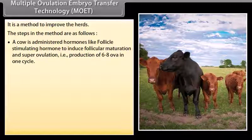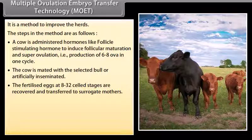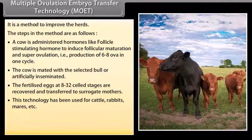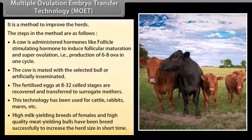Multiple ovulation embryo transfer technology (MOET) is a method to improve herds. A cow is administered hormones like follicle stimulating hormone to induce super ovulation, producing 6 to 8 ova in one cycle. The cow is mated with a selected bull or artificially inseminated. Fertilized eggs at 8 to 32 celled stages are recovered and transferred to surrogate mothers. This technology has been used for cattle, rabbits, mares, etc., to increase herd size in the short term.